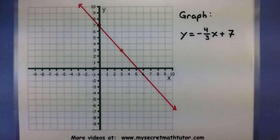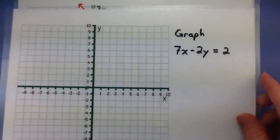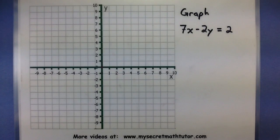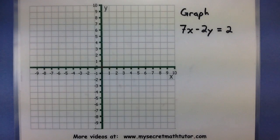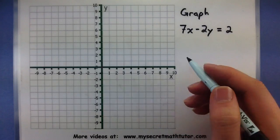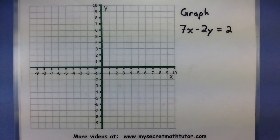Now the only monkey wrench that can sometimes be thrown into this process is when you're given a line that isn't entirely in slope-intercept form. In cases like this, we may have to do some rewriting in order to get it into that nice form. So to get things into slope-intercept form, we want to solve for y.